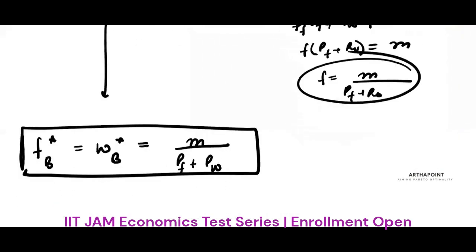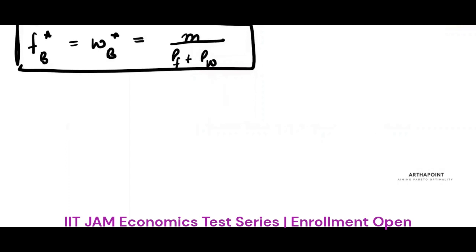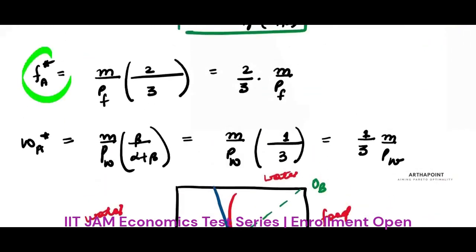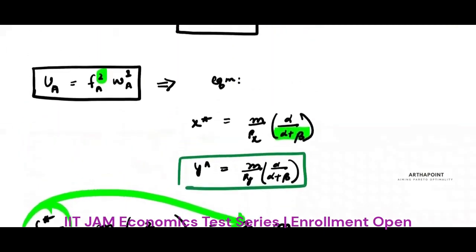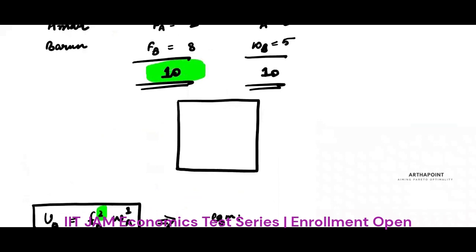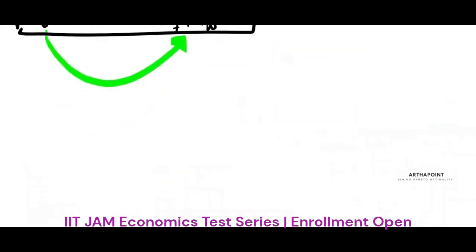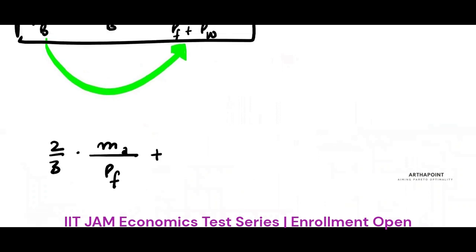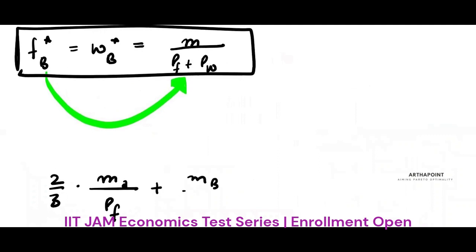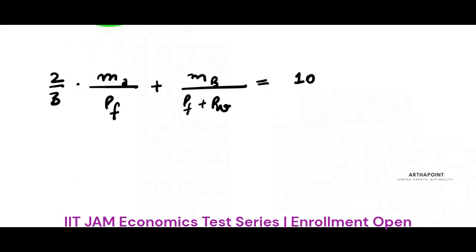Now, knowing food consumed by both A and B, we can add them together and set the sum equal to the total food available in the economy. So: (2/3) × MA/PF + MB/(PF + PW) = 10. This is the market clearing condition, and we want to find the price ratio PF/PW.